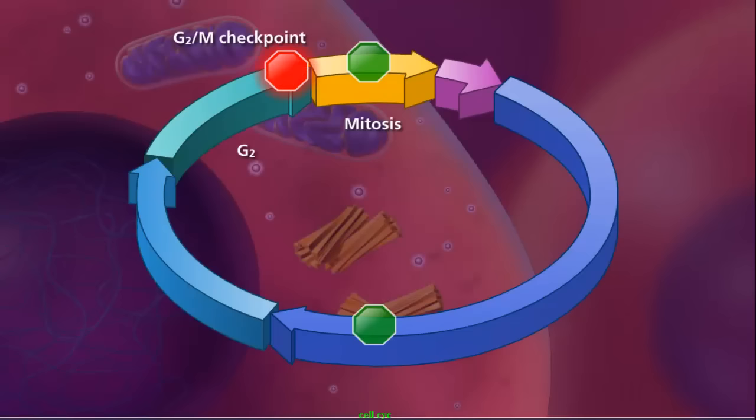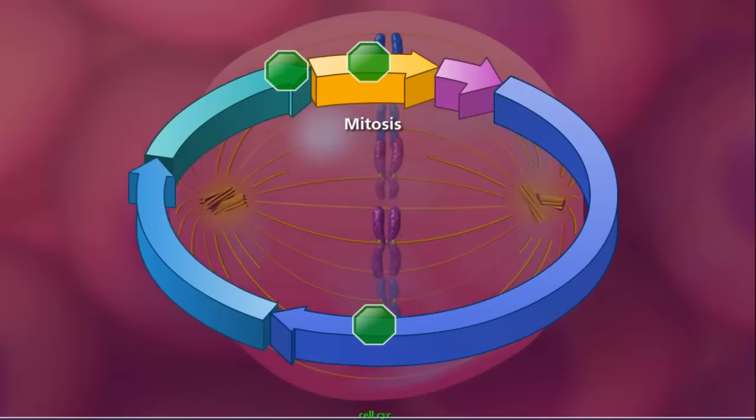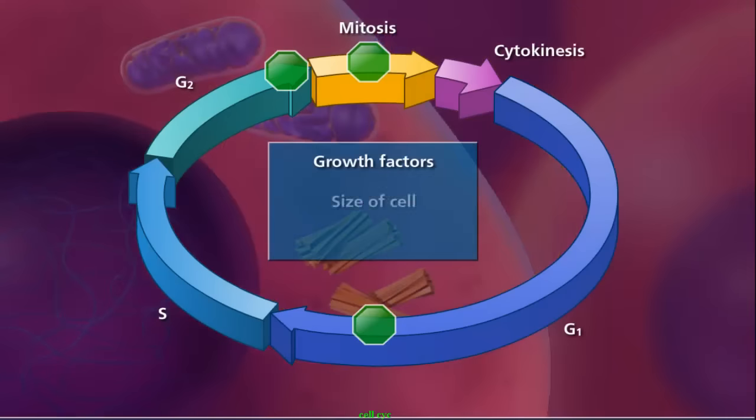The G2M checkpoint allows cells that have successfully completed all three phases of interphase to begin mitosis. The last checkpoint is the spindle checkpoint, ensuring that all chromosomes have attached to the spindle in preparation for anaphase.